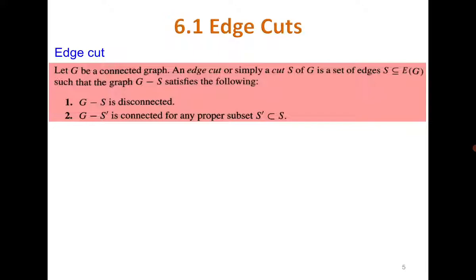We have already discussed cut edge, which means a bridge — an edge whose deletion disconnects the graph. An edge cut is a set of edges. An edge cut generated by S is the set of edges which is a subset of the given graph such that when you delete all edges of S from g, the graph g minus S is disconnected. At the same time, there should not exist a smaller set than S whose deletion also disconnects the graph — meaning S should be a minimal edge cut.